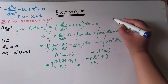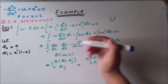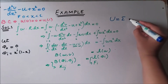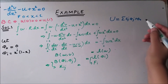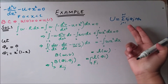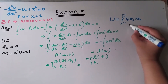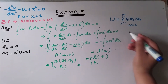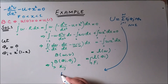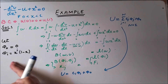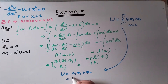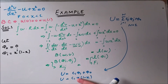We know that the capital U, the approximate solution, is equal to the summation of c_j times phi_j plus phi_0, where j goes from 1 to n. Let's suppose n equals 1; then U equals c_1 times phi_1. Plugging i = 1, we get U = c_1 · x(1 − x), and phi_0 equals 0. So the unknown parameter we need to find is c_1.